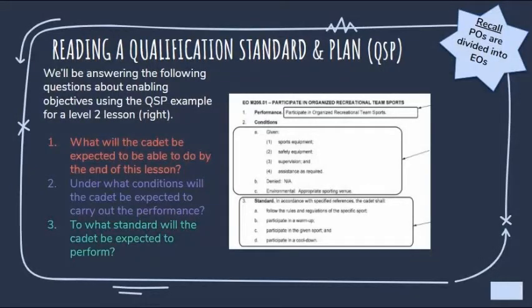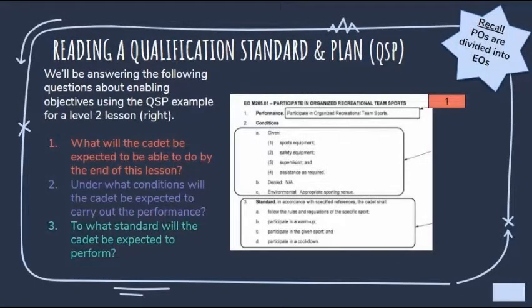Now we're going to go over the process of reading a Qualification Standard and Plan, answering questions regarding enabling objectives using the QSP example on the right hand side. The first question is: what will the cadet be expected to be able to do by the end of this lesson? This can be found in the performance section of the lesson, and will typically match the title almost every single time — however, there are a few exceptions, so make sure you are double checking every single time.